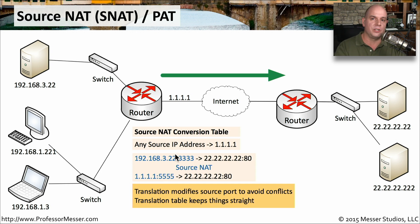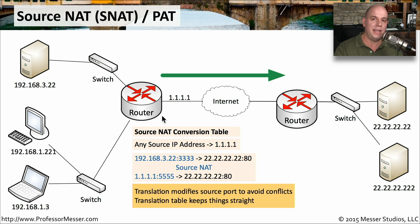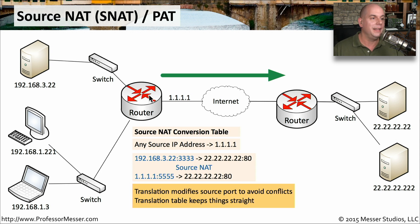This table is going to contain every single address translation done through every device communicating through that router, firewall, or NAT device, so it might be an extensive table. When the traffic comes back from the web server, the information is examined in the table, the address translation is performed again, and the packet is finally sent back to the original internal IP address.